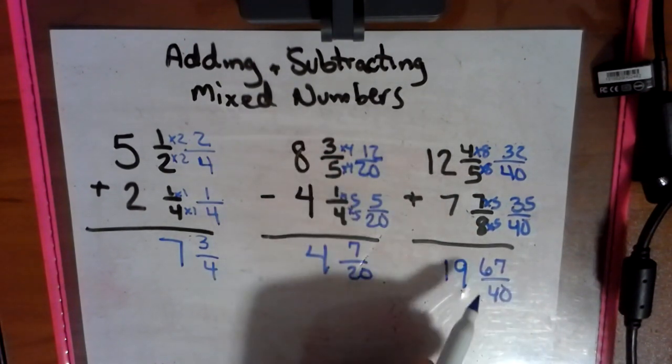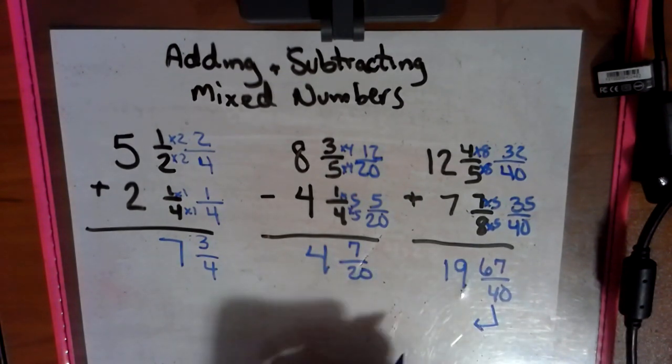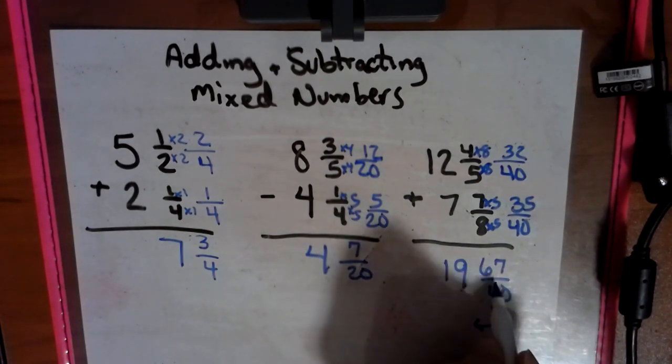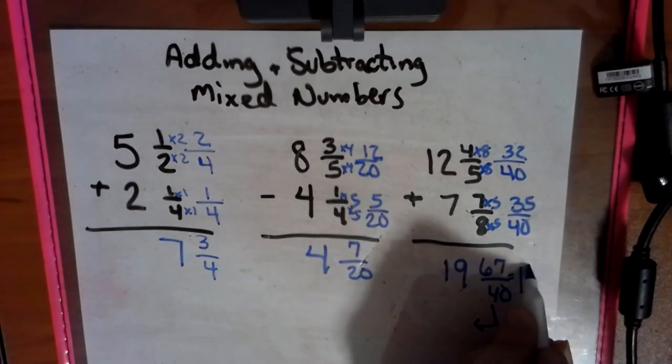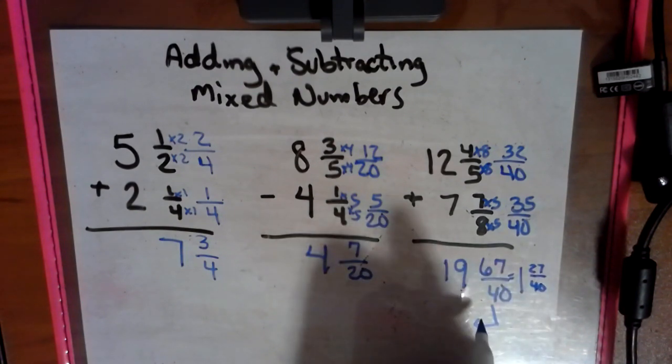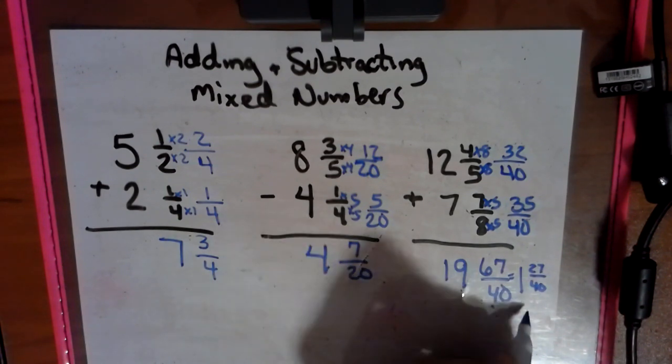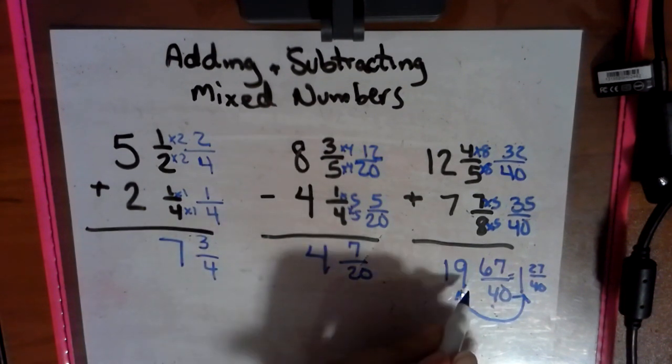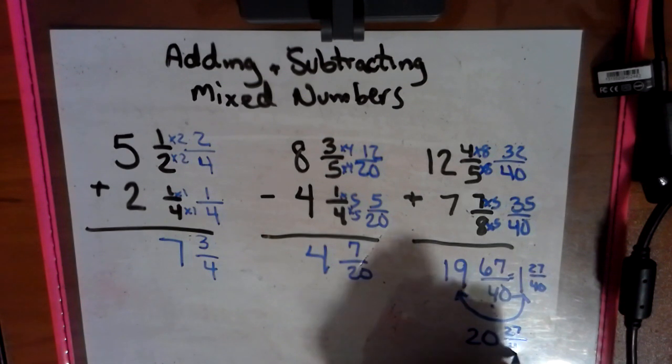We cannot leave this. This is top-heavy. We have to fix this. So, remembering how to do this, you ask yourselves how many forties go into sixty-seven? It goes in one time with twenty-seven left over, over forty. And then we have to take both of our whole numbers, this one we just created and that nineteen, and put them together. So nineteen and one make twenty and twenty-seven fortieths.